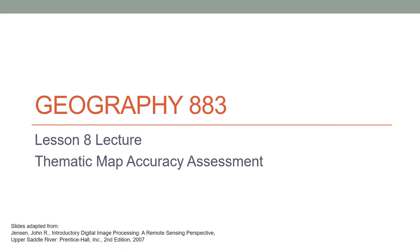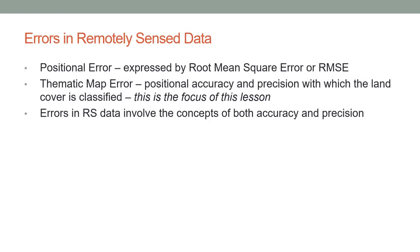This is the Lesson 8 lecture, and it has a focus on thematic map accuracy assessment. There are many sources of error in remotely sensed data. In particular, you have positional error of the imagery that is acquired, and it is measured in root mean square error, or RMSE. In this particular lesson, we will focus on thematic map error — the classified maps that you have developed from the remotely sensed data — and the positional accuracy and precision with which land cover is classified.